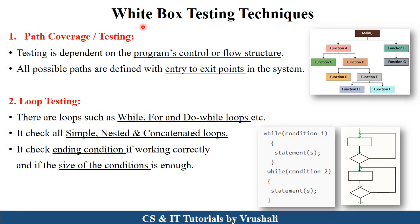Now the next point is White Box Testing Techniques. The first technique is Path Coverage or Path Testing. Here the tester checks the complete control or flow of your program. For example, suppose in your program's main function, you declare function A and function B. From function A, you call function C and function D. From function D, you call function E and function F. So basically they check the complete flow of your program, including the entry and exit point of each and every function and module.